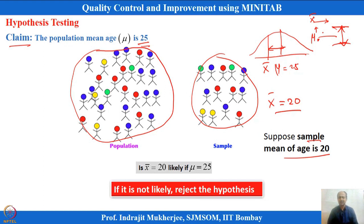In this simple example, we have population mean age as the target. The expectation is that it is near to 25, but we are getting 20. Is 20 close to 25? That is what we want to prove or disprove by hypothesis testing. The statistician has given us options: either I am close to 25 or I am different from 25.